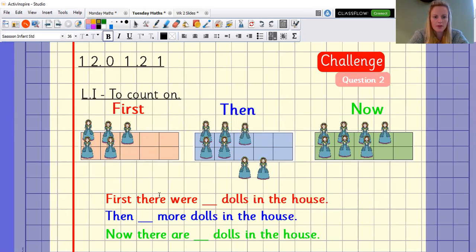Right. Let's have another go. There were dolls in the house. There are one, two, three, four, five dolls in the house. Then there were two more dolls in the house, which means five, six, seven dolls.